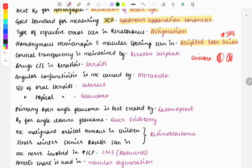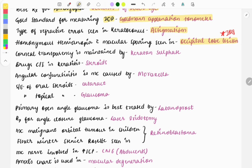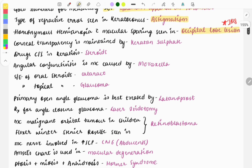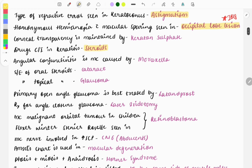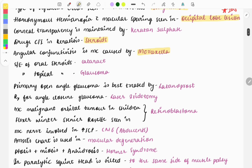Corneal transparency is maintained by keratan sulfate. Drugs which are contraindicated in keratitis are steroids because steroids cause perforation of the cornea. Angular conjunctivitis is most commonly caused by Moraxella. This question was also asked in NEET.